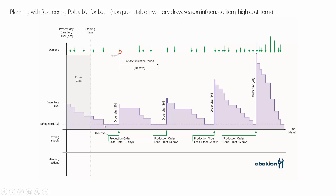And if we reach the safety stock level and get below it, it will of course create a new order. But basically, lot for lot should only go into the safety stock level and do nothing. That means it will trigger by the demand and look 40 days ahead because the lot accumulation period is set to 40 days. This means it will accumulate those four orders within the period, making one production order — if it's a produced item — with the lead time and an order size of 20 if the sum of those four were 20.